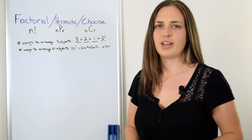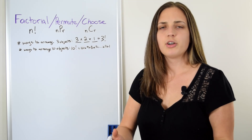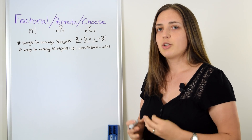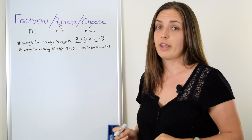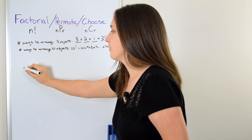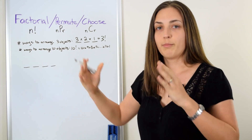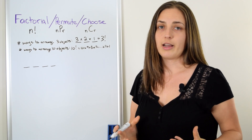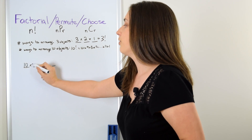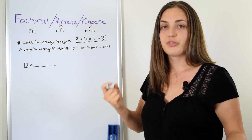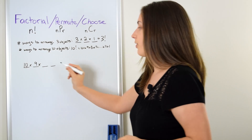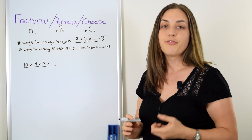Now let's say you have 10 objects and you don't care about arranging all 10 of them. Maybe you have 10 books and you want to put only 4 of those books onto a bookshelf. You have 4 positions, and in the first position you have 10 choices of books. Now that you've used up one book, you only have 9 books left for the next position. Then 8 choices, and finally 7 choices.